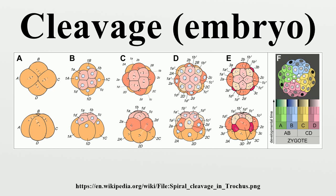In other words, the orientation of divisions that produces each quartet alternates between being clockwise and counterclockwise with respect to the animal pole. The alternating cleavage pattern produces quartets of micromeres that reside in the cleavage furrows of the four macromeres. When viewed from the animal pole, this arrangement of cells displays a spiral pattern. Specification of the D macromere is an important aspect of spiral development.